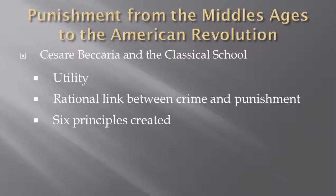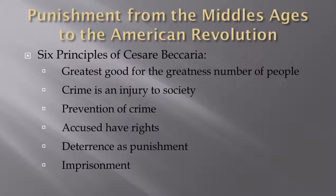As part of this, he developed six principles as part of the classical school approach. First, the greatest good for the greatest number of people — truly establishing the parameters for society that brought about the greatest joy and happiness while limiting the adverse impacts of society. Second, crime is an injury to society. It is not only an injury to the person directly impacted, but it also impacted public safety and reduced the safety people felt. He believed crime had a greater impact than just the specific person.